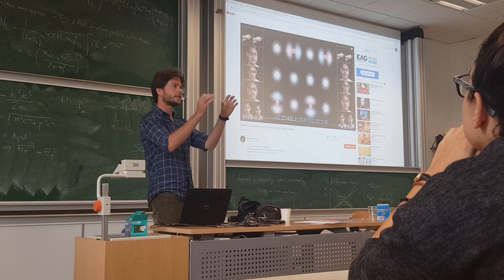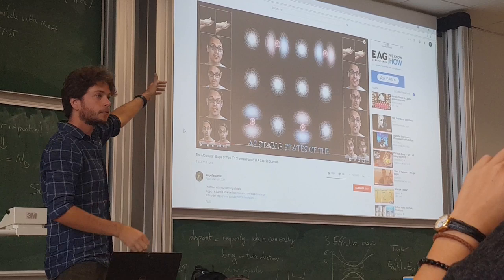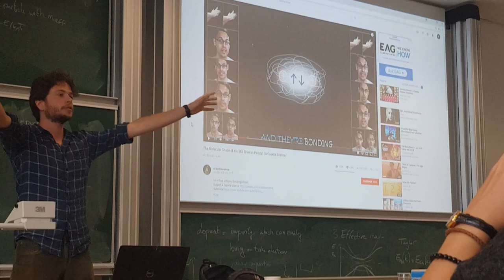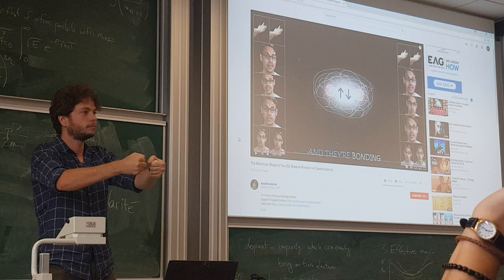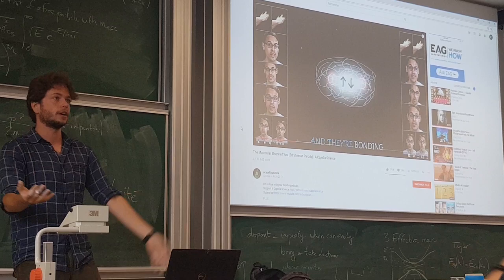We haven't discussed orbitals yet. Orbitals are the spatial distribution of the wave function — we discussed the values of the energy, not how the particle distributes in space, but each energy level corresponds to a certain orbital. When you bring two separate systems closer together, you lift the degeneracy: one state goes lower in energy, one goes higher. When two particles get close and the energy goes down, the particles would rather be close than far apart — that's called covalent bonding.